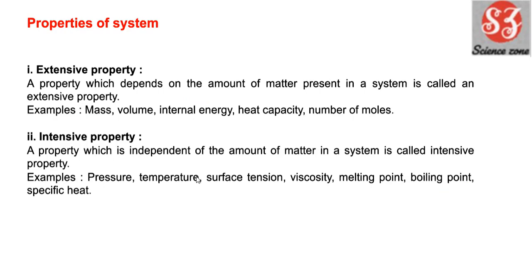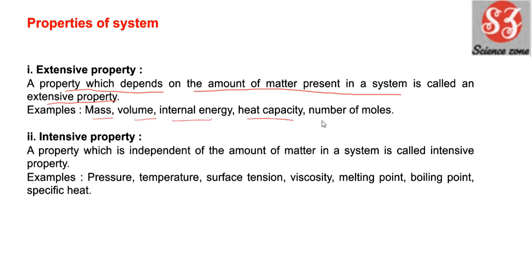Next: properties of system। System के दो main properties हैं: पहला extensive property, दूसरा intensive property। Extensive property वो property है जो depend करती है on amount of matter present in system — कितना matter present है, उसका volume क्या है, उसका mass क्या है, number of moles क्या है। वो property जो इन चीजों पर depend करेगी उसे कहेंगे extensive property, जैसे कि mass, volume, internal energy, heat capacity, number of moles।